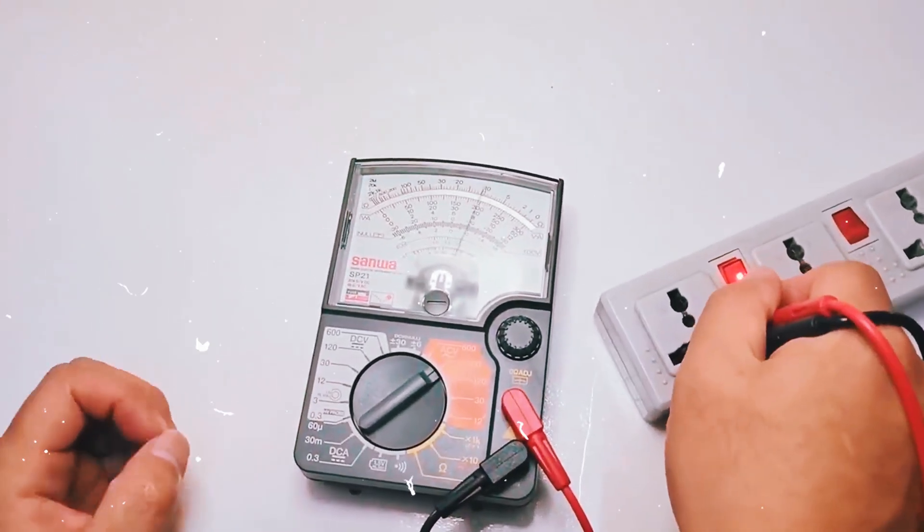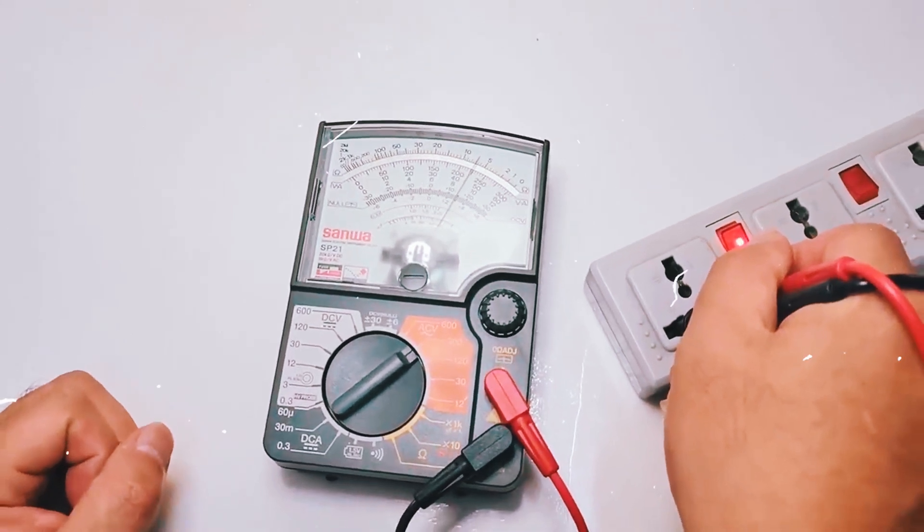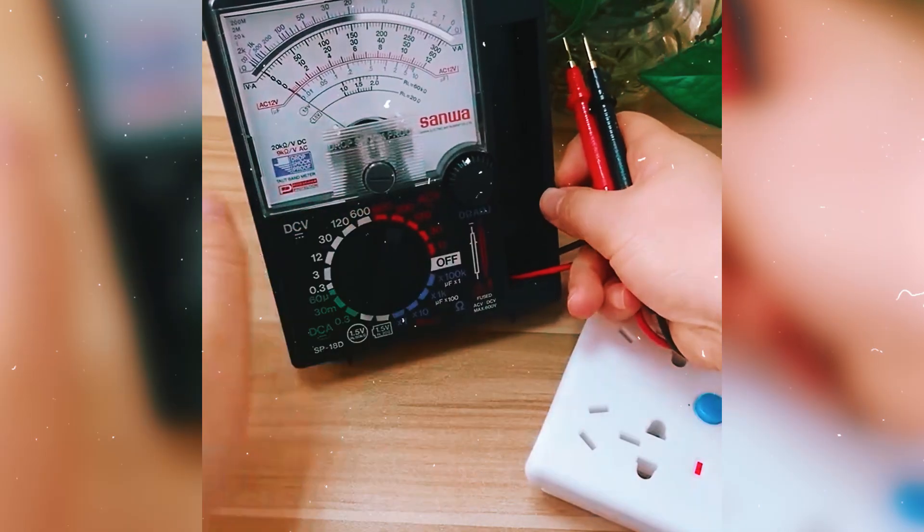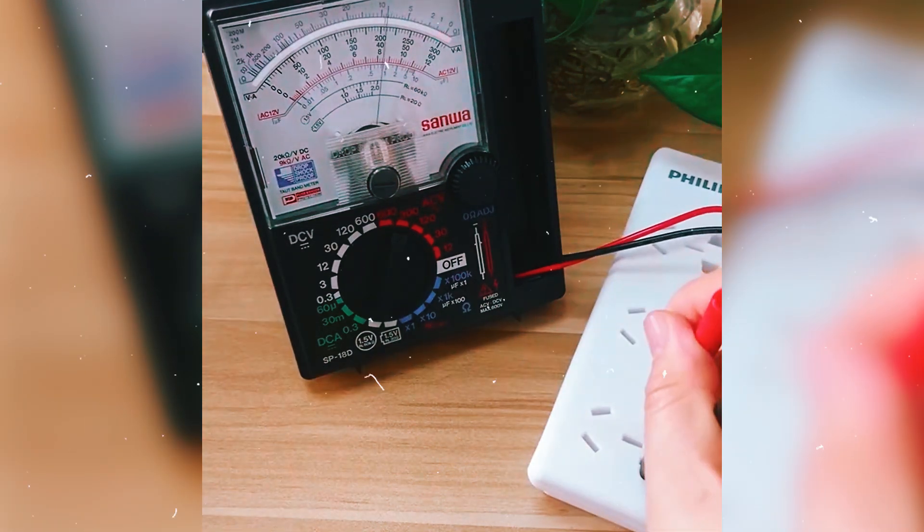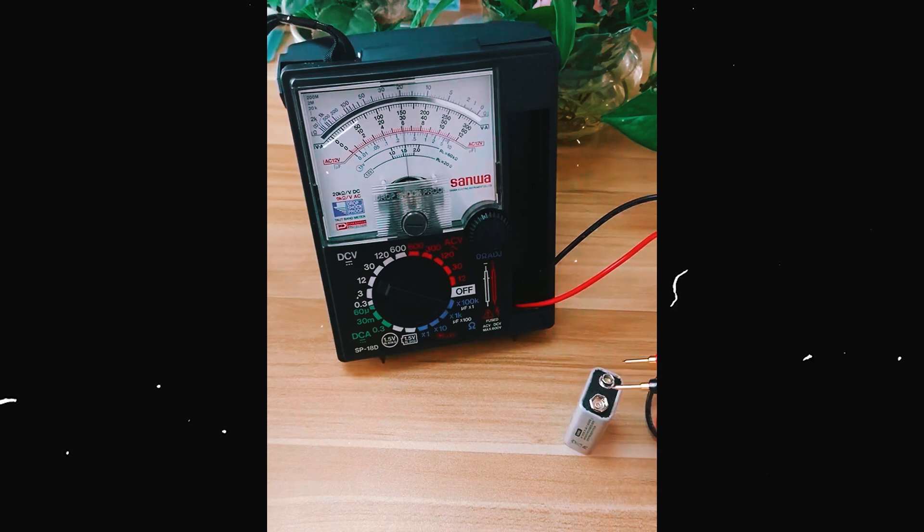The needle moves continuously, which makes it easier to see fluctuations in a signal. If you're working with audio electronics, or any situation where you need to monitor changing voltages or currents, an analog multimeter can give you better intuition.